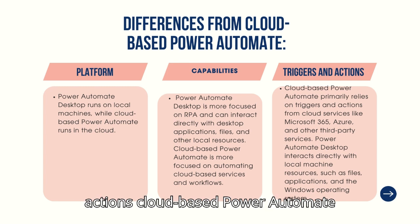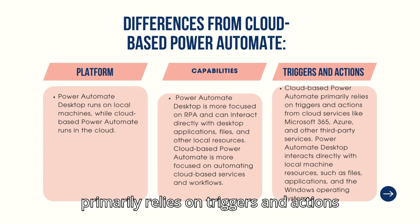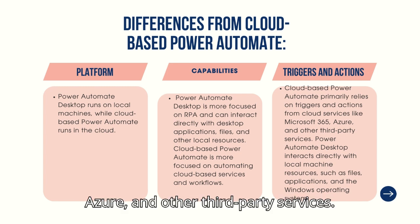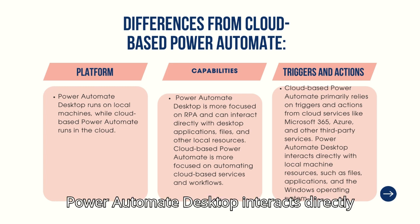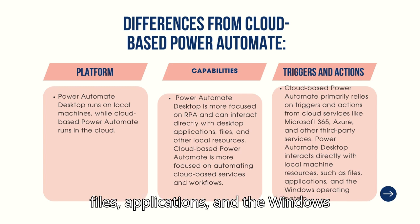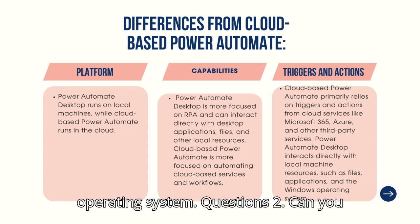Triggers and actions: cloud-based Power Automate primarily relies on triggers and actions from cloud services like Microsoft 365, Azure, and other third-party services. Power Automate Desktop interacts directly with local machine resources such as files, applications, and the Windows operating system.